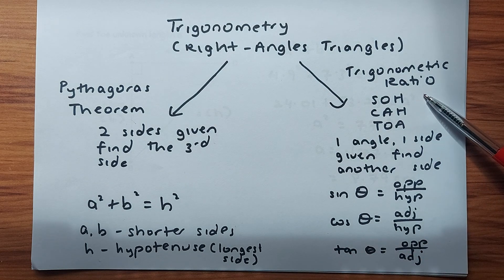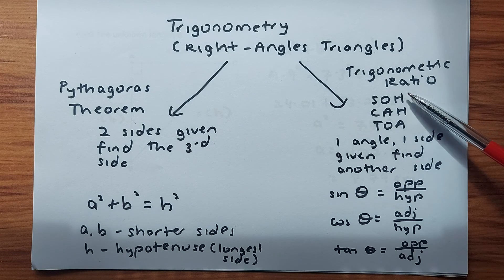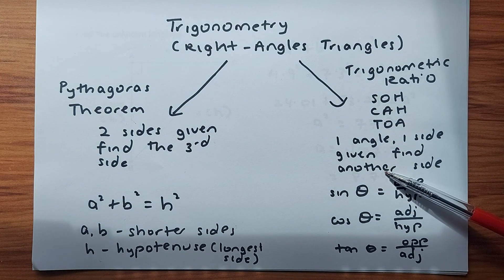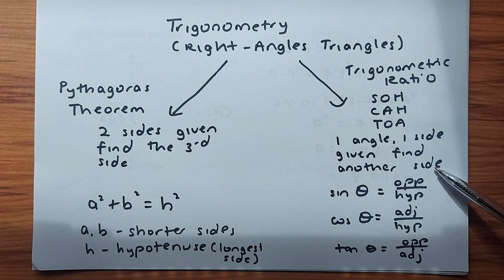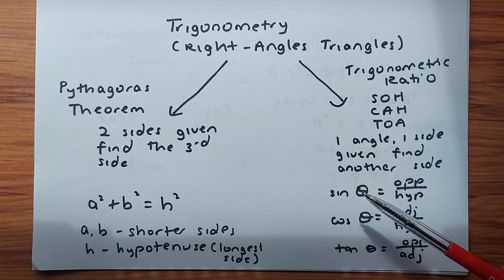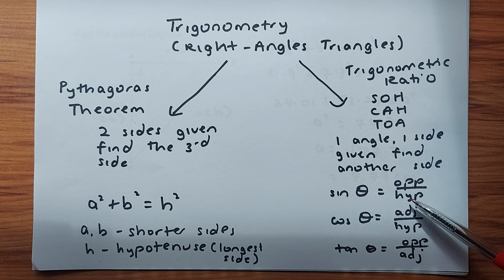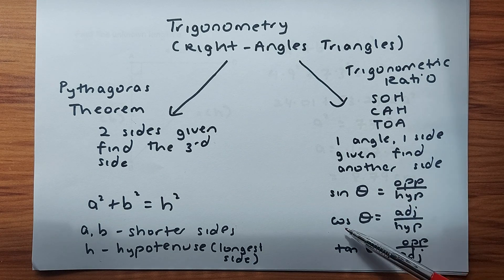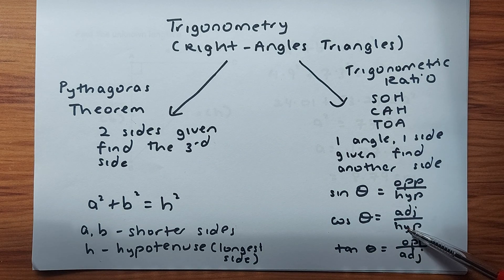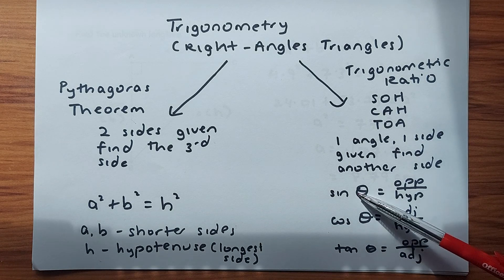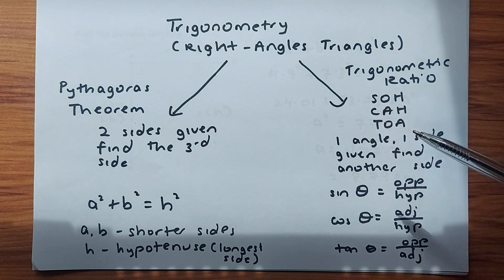The other method is called the trig ratio, also known as SOH CAH TOA. It is used when one angle and one side are given and you need to find another side. The three formulas are: sin theta is opposite over hypotenuse (SOH); cos theta is adjacent over hypotenuse (CAH); and tangent theta is opposite over adjacent (TOA). That's how SOH CAH TOA is derived.